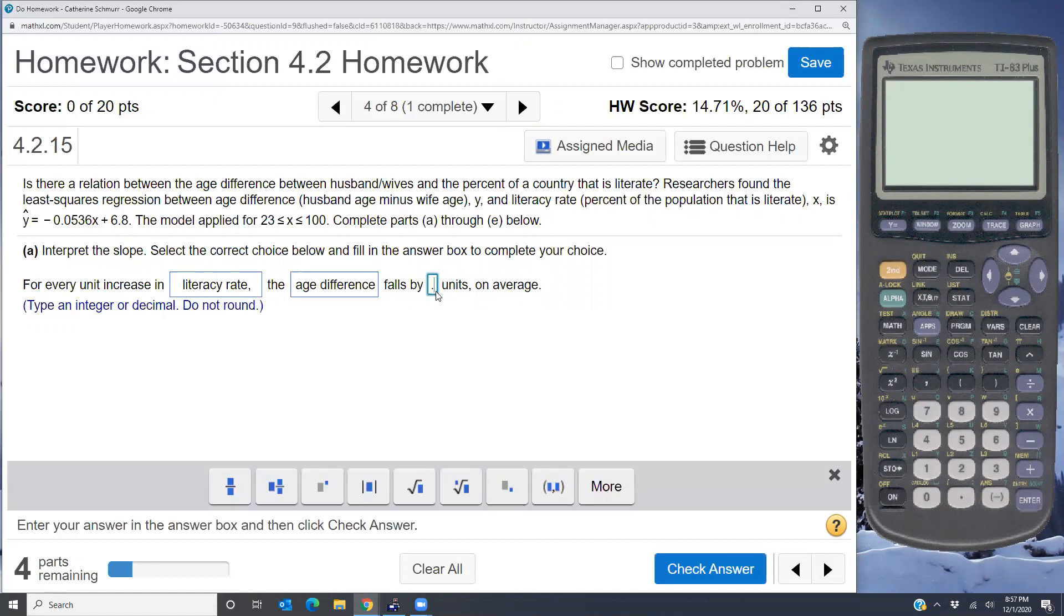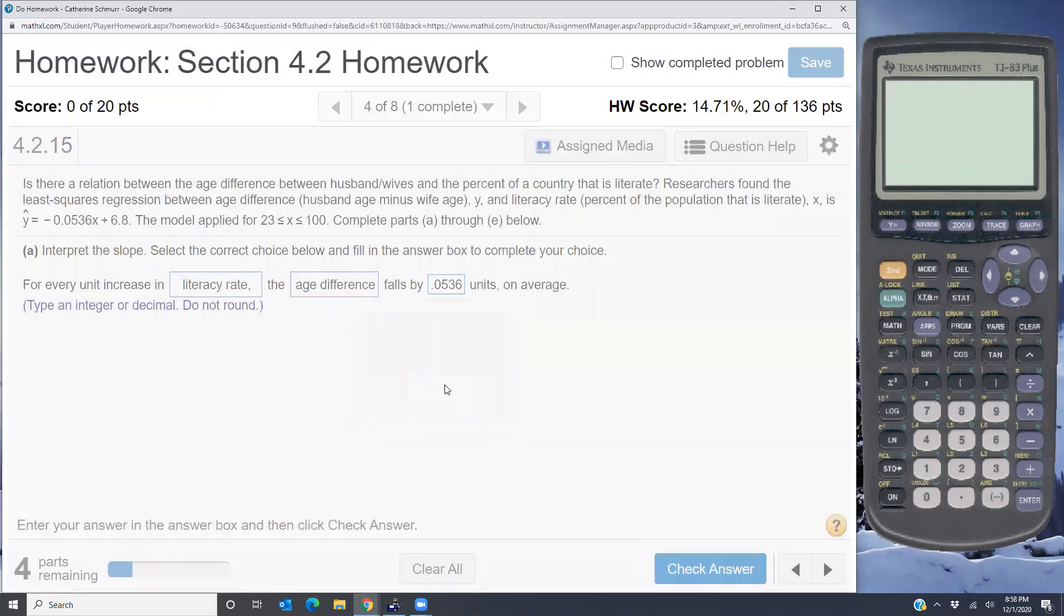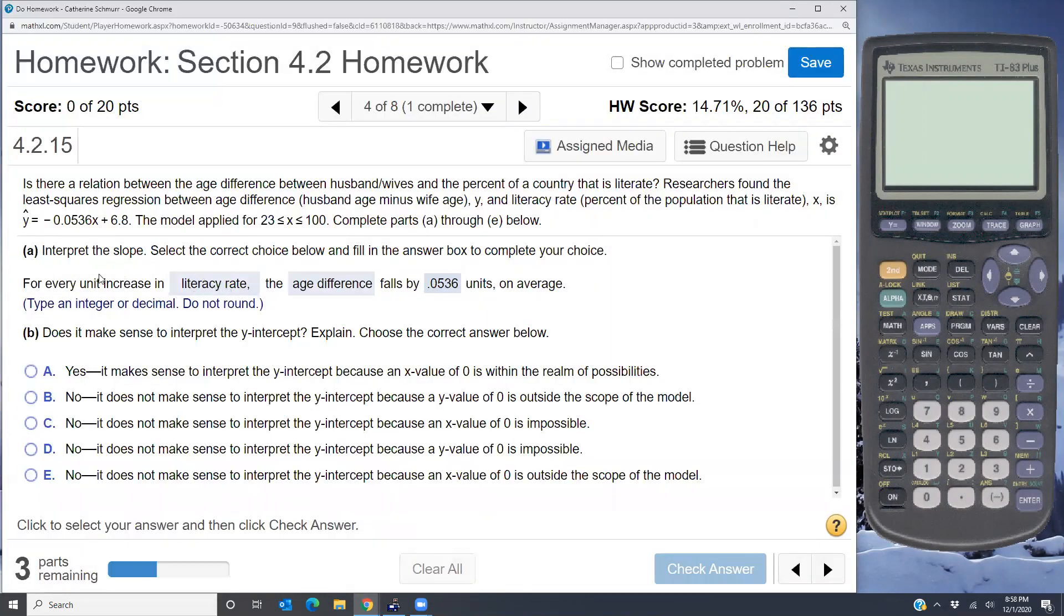Now although the slope is negative, I do not have to put the negative sign here because the word falls by takes the place of that negative. So you always want to select every unit increase in x, the y, and then give what the slope is, so the number attached to the x.